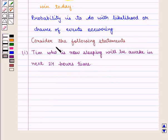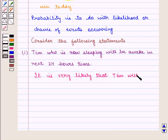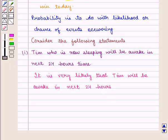Second, consider the following statements. The first statement is, Tim, who is now sleeping, will be awake in next 24 hours time. Now it is very likely that Tim will be awake in next 24 hours. It means the chances are very high. Therefore, it is a likely event.